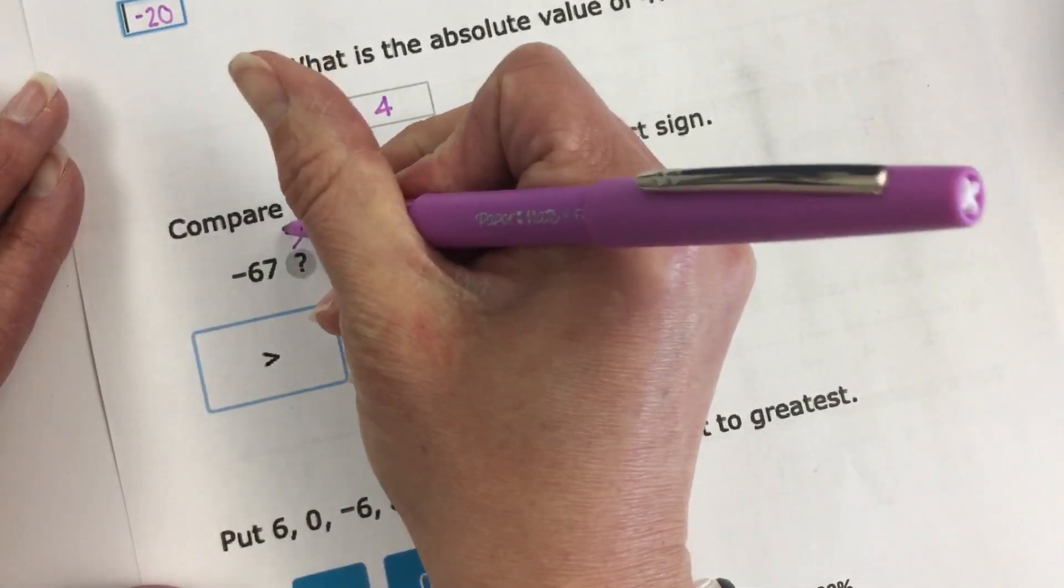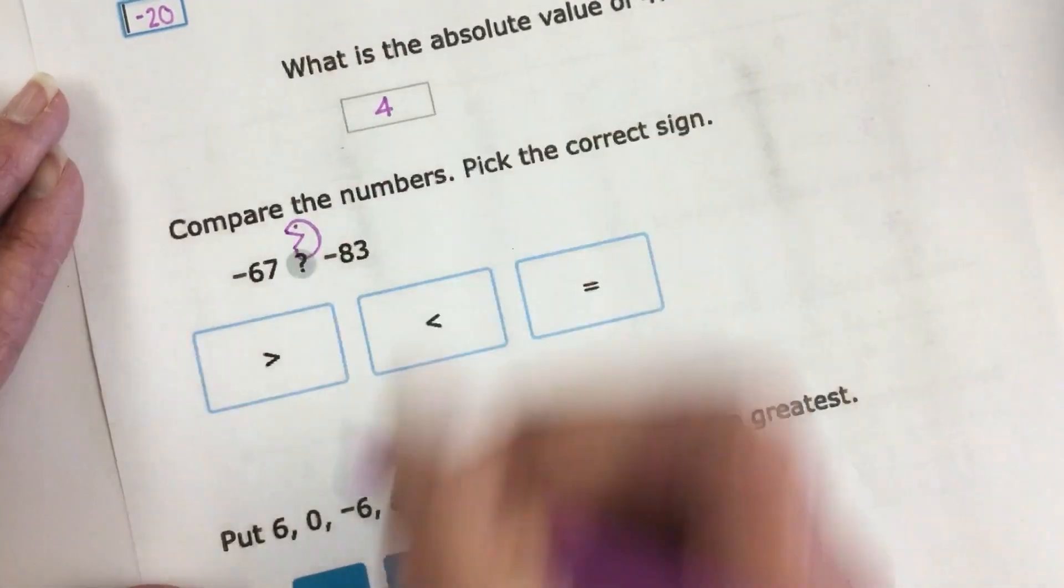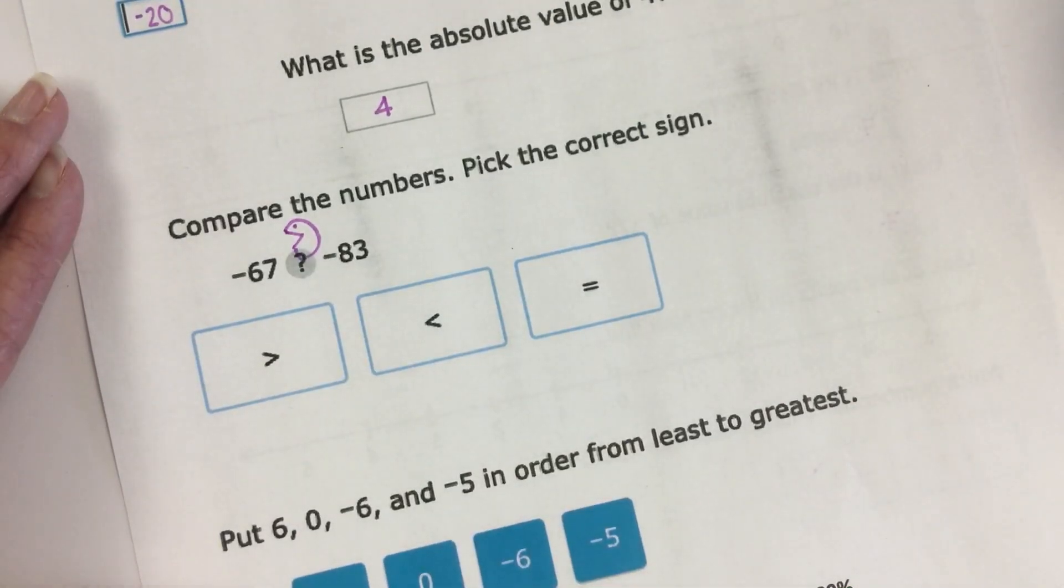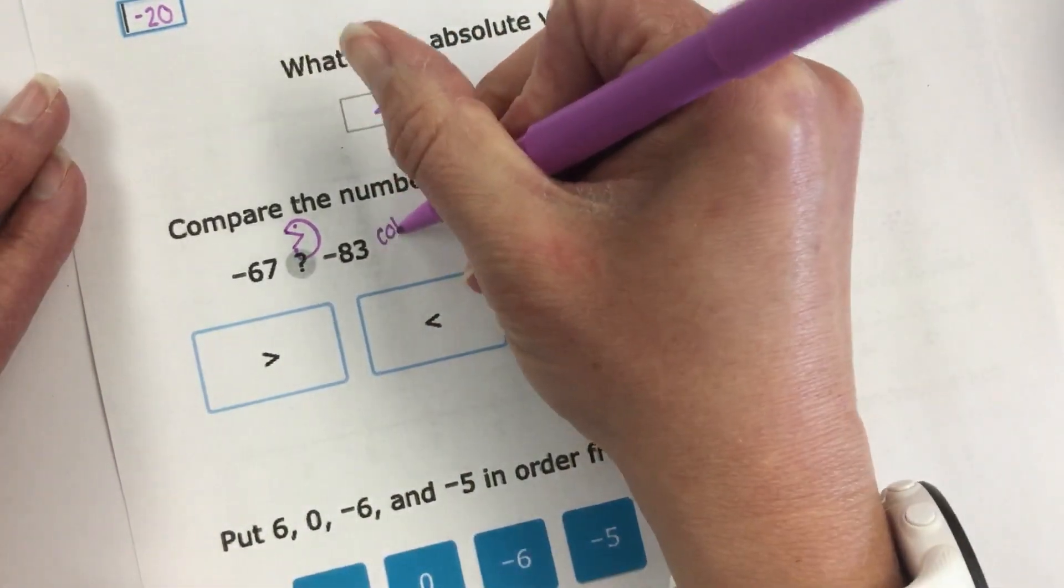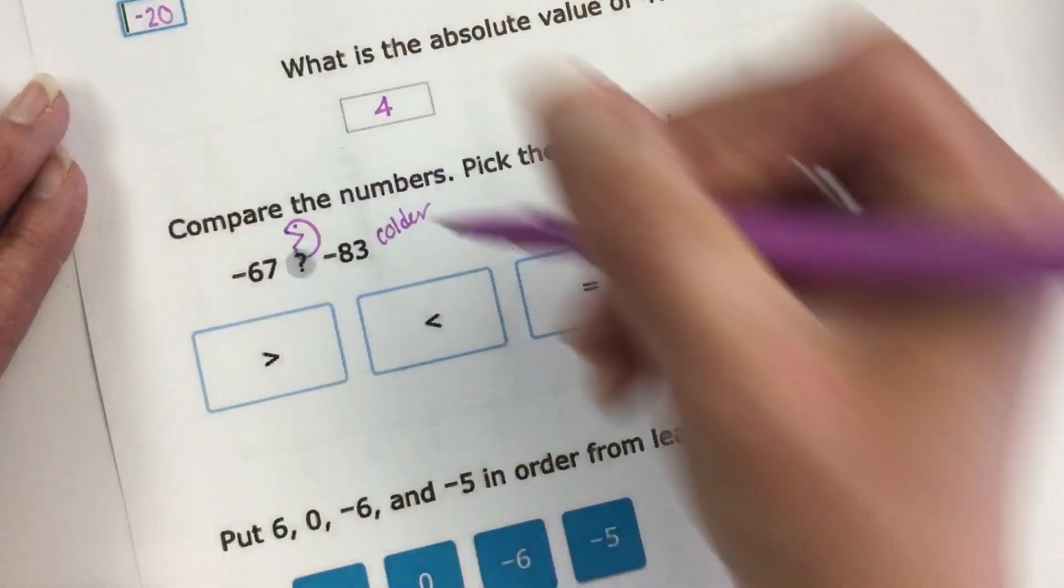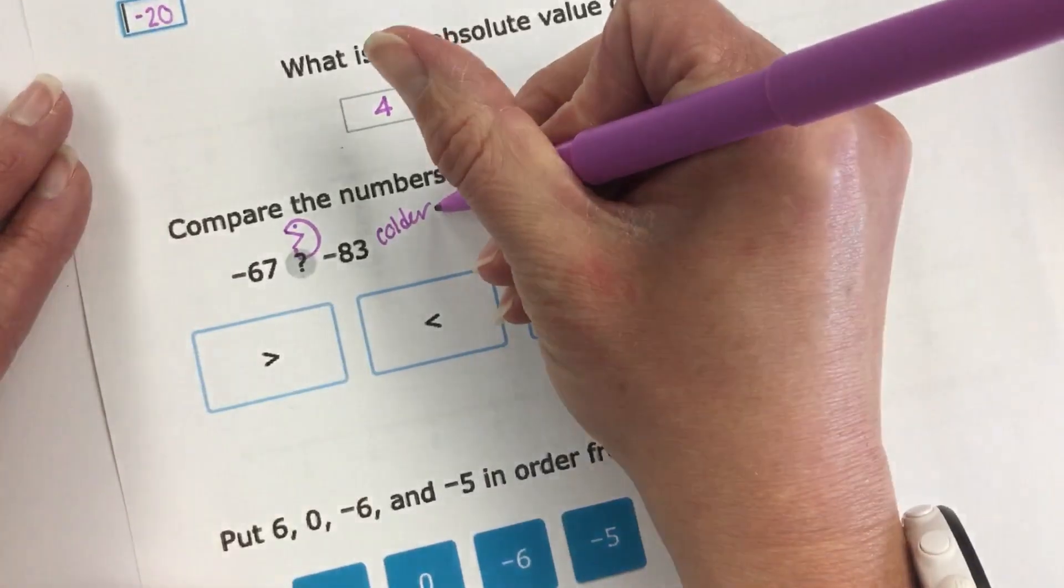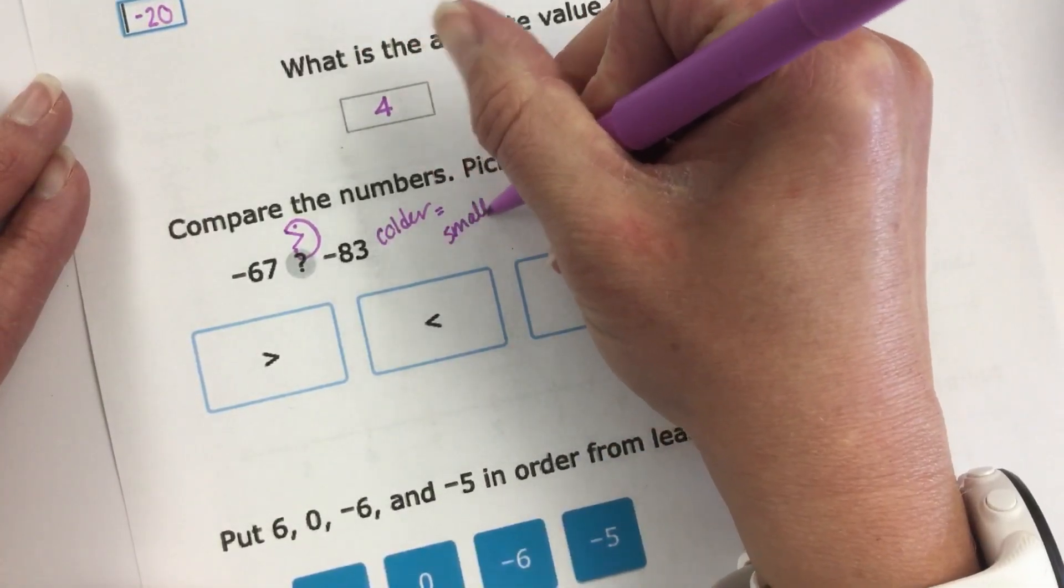So the Pac-Man would be eating the larger number. I always think about who's colder. Negative 83 is colder than negative 67. So colder numbers are smaller numbers.